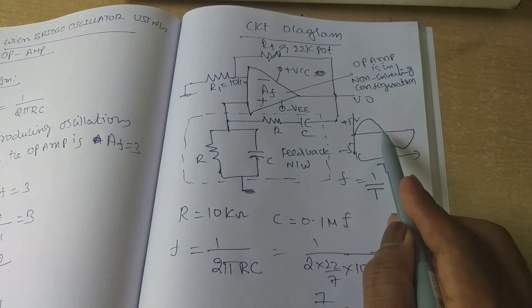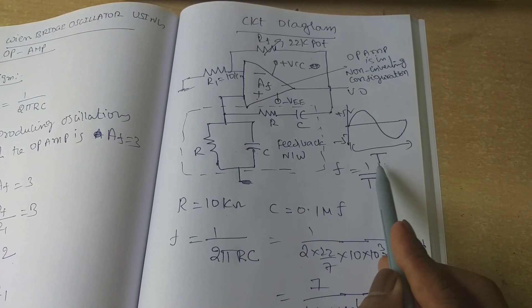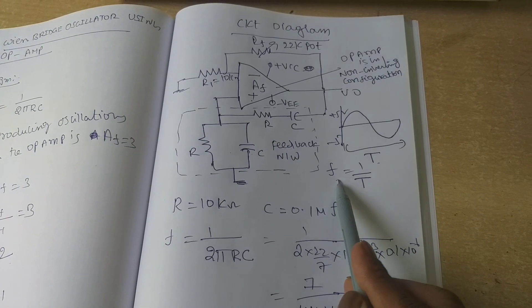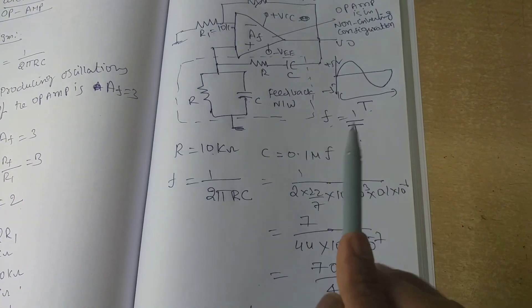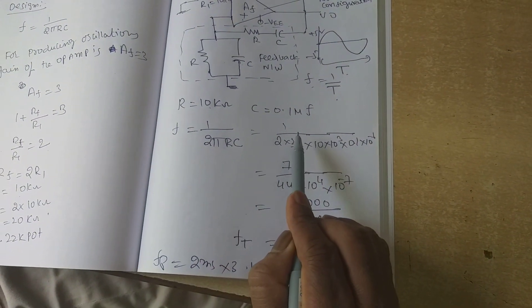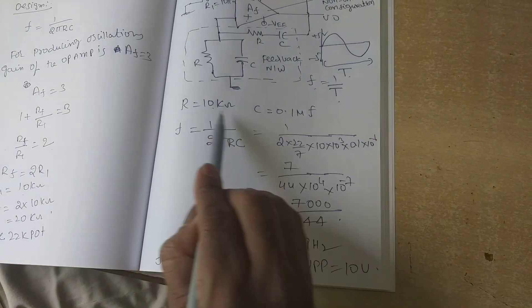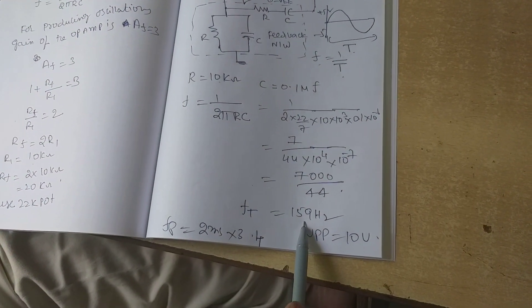It is used to generate sine waveform. Time period of the waveform here: F is equal to 1 by 2πRC. Here R is equal to 10 kilo ohms, C is equal to 0.1 microfarad. F is equal to 1 by 2πRC. Substitute these R and C values in that expression. F is equal to 159 Hz.